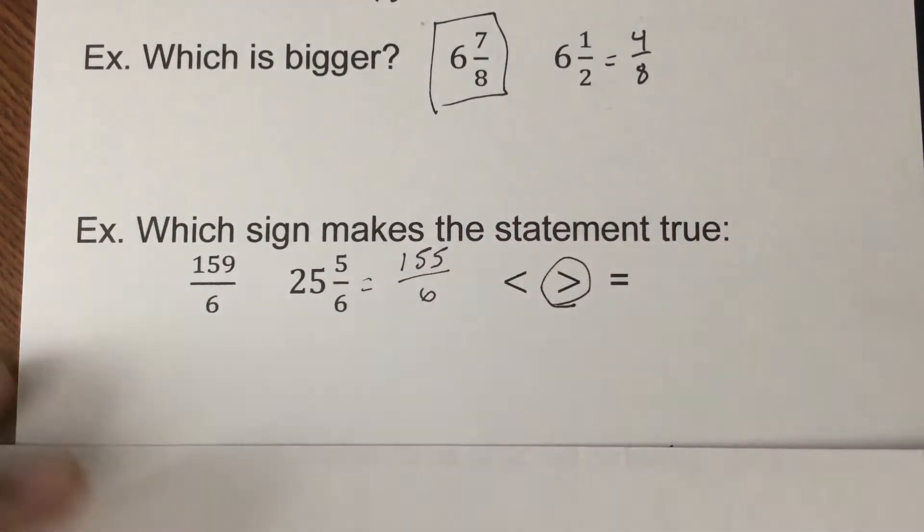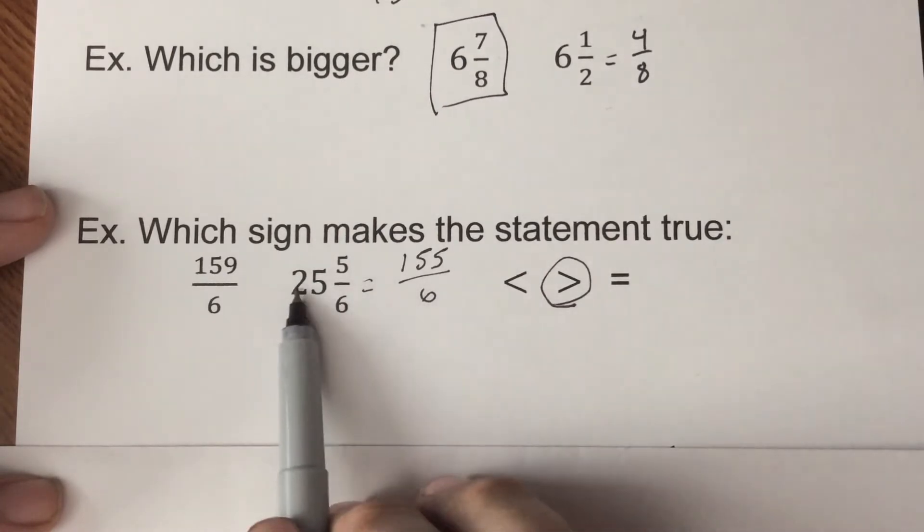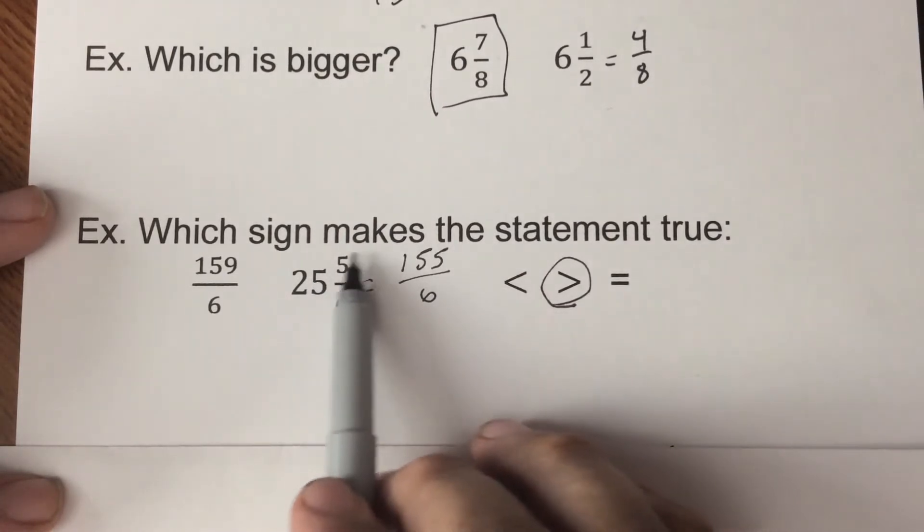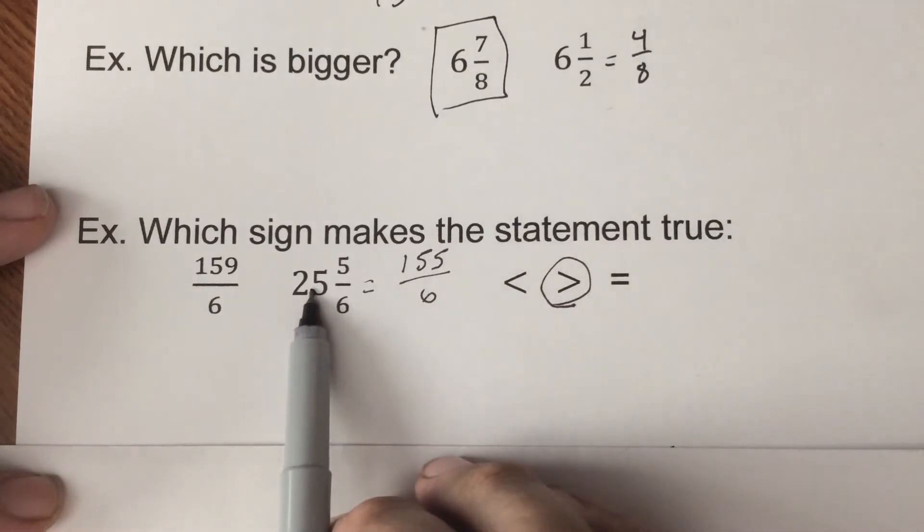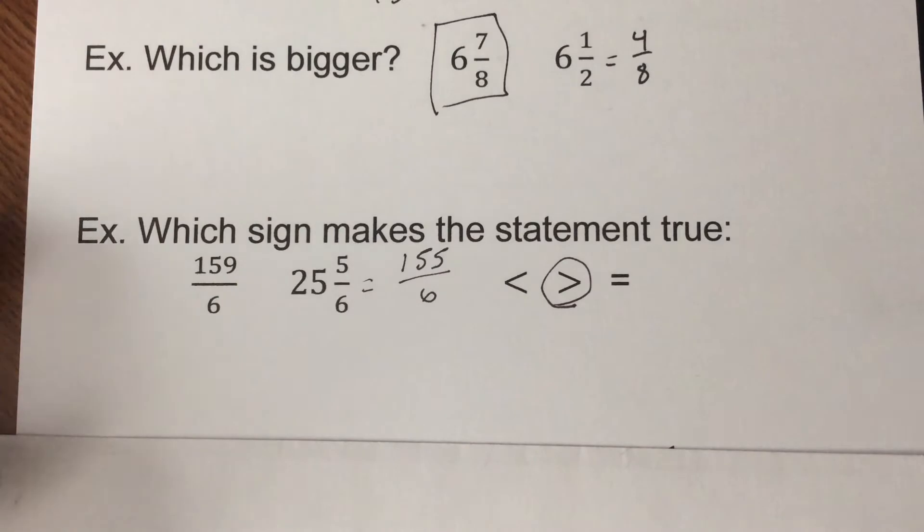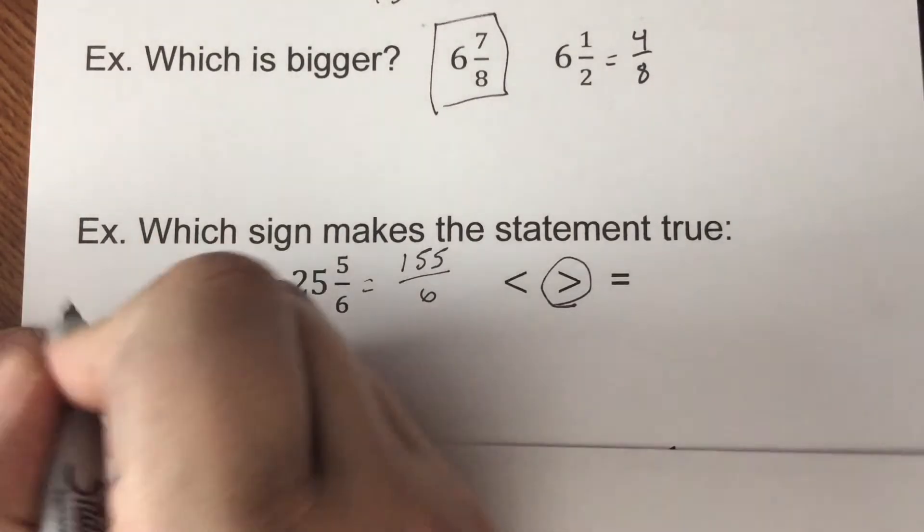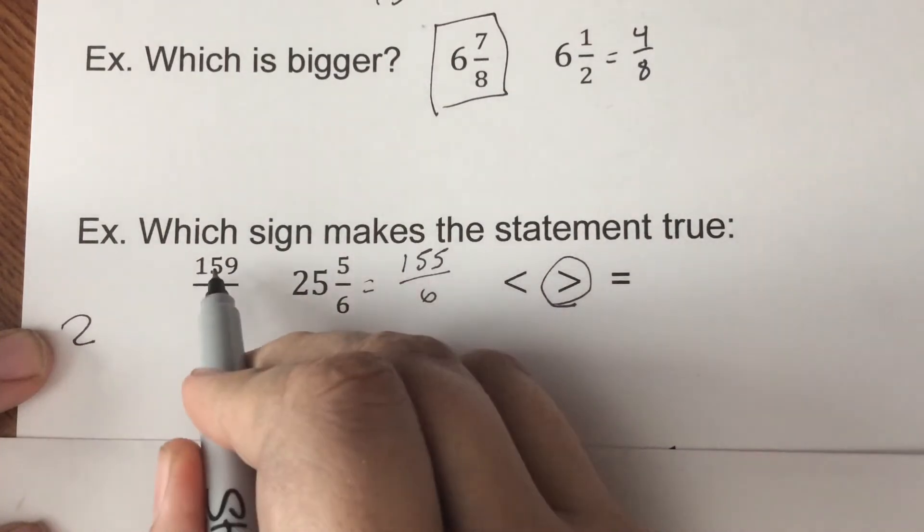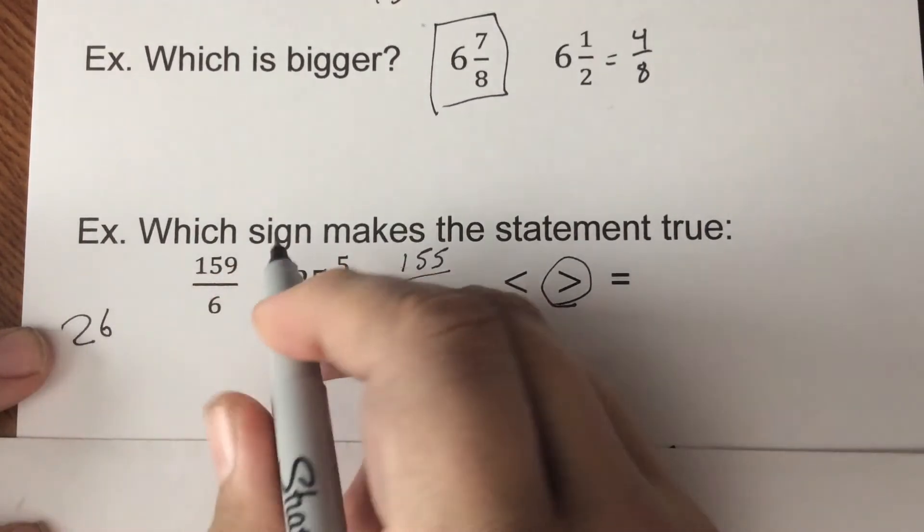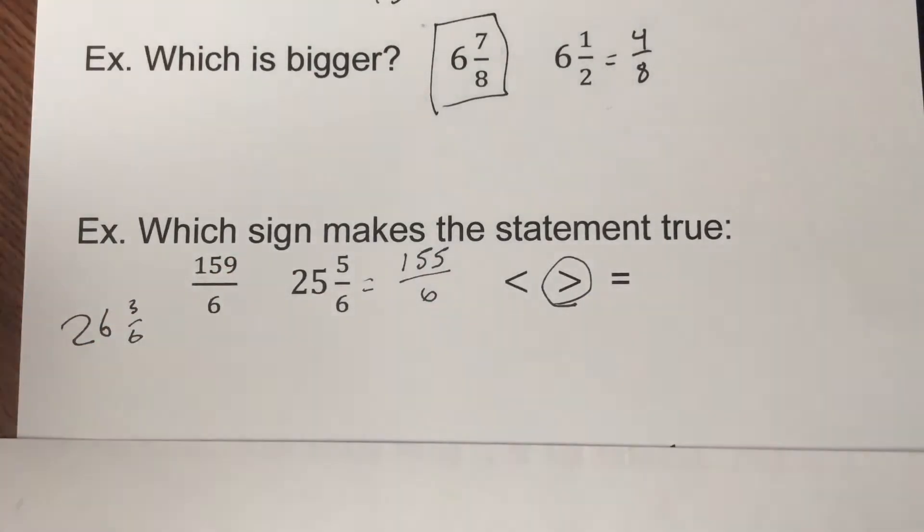So we would use our greater than sign. So bottom number, the denominator, times the whole number, add it to your numerator. So 6 times 25 is 150, plus 5 is 155. That's how I did it. We could have gone the other way with this and divided 159 by 6. We would have got 26 and 3/6, which is the other way we could have gone about it.